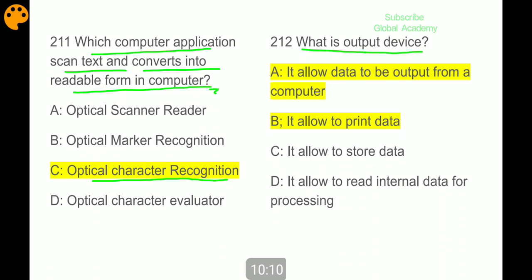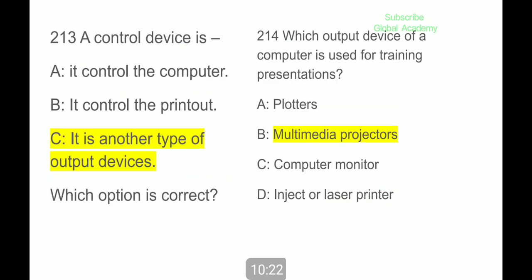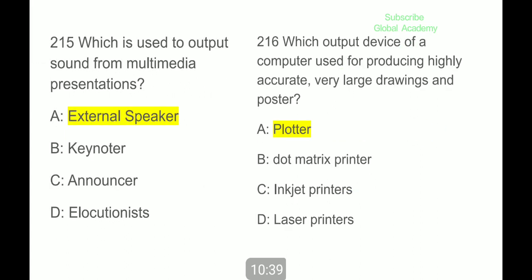What is an output device? Output devices allow data to be output from a computer. Control devices are another type of output device. Which output device of a computer is used for training presentations? Multimedia projectors. Which is used to output sound from multimedia presentations? External speakers. Which output device of a computer is used for producing highly accurate, very large drawings and posters? Plotters.